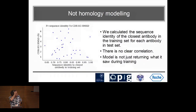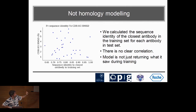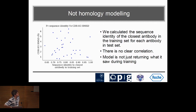A reviewer asked us to look into what the model is actually learning — they hypothesized it might just be learning to homology model, copying CDR loops it's already seen. What we show here is the RMSD of CDRH3 against the sequence identity to the closest antibody in the training set. Each dot is a data point in the test set, and we see no clear correlation, so the model is clearly learning something more than just copy-pasting CDR loops.